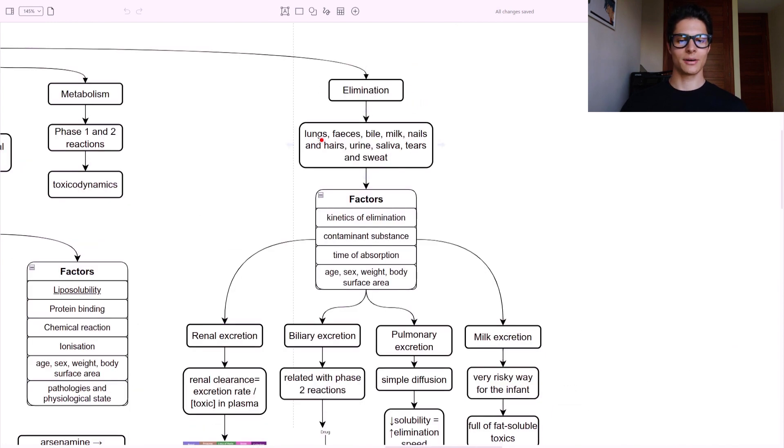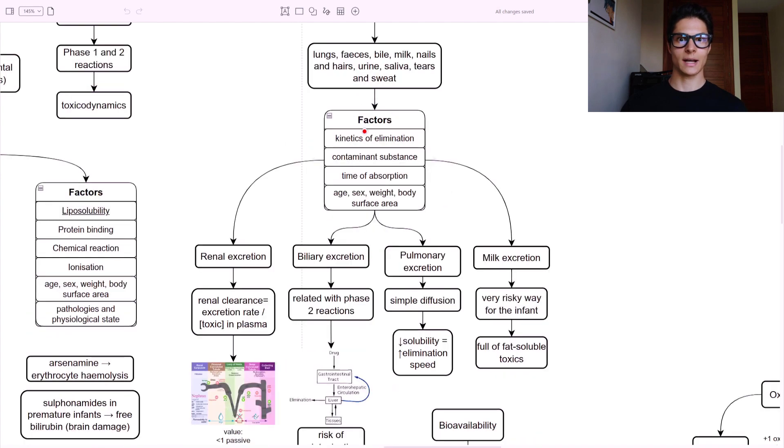Elimination - lungs, feces, bile, milk, also nails and hairs, urine, saliva, tears, and sweat. These are all the ways we have to get rid of toxins, which is very good. The factors - kinetics of elimination, contaminants, substance, the time of absorption, age, sex, weight, body surface area. So these are the factors that determine how we are going to eliminate those toxins.